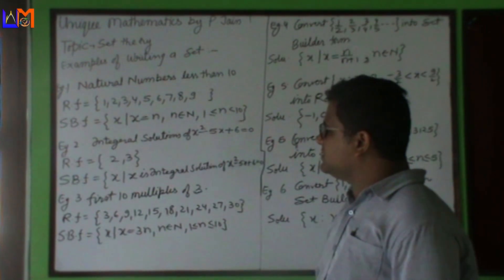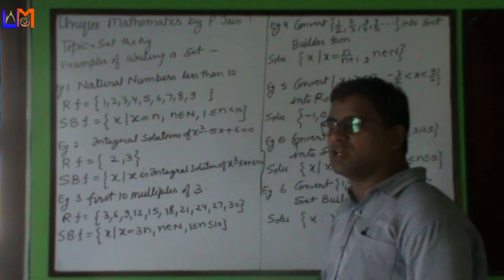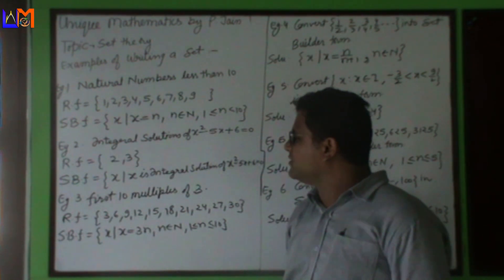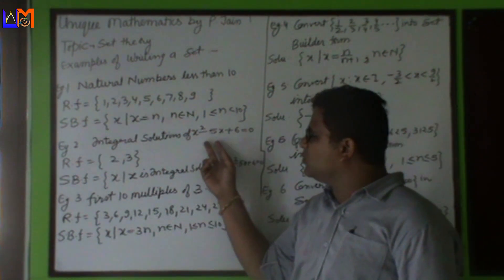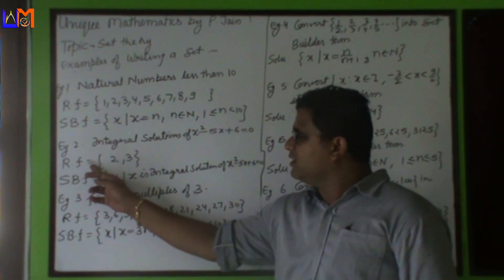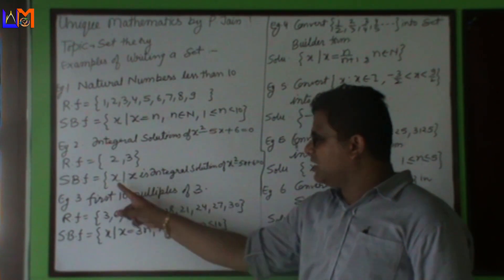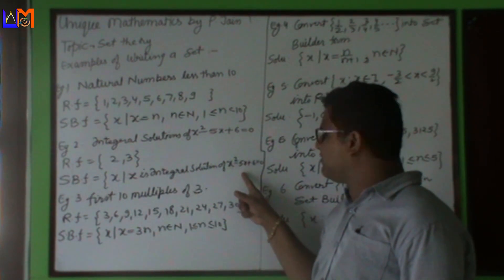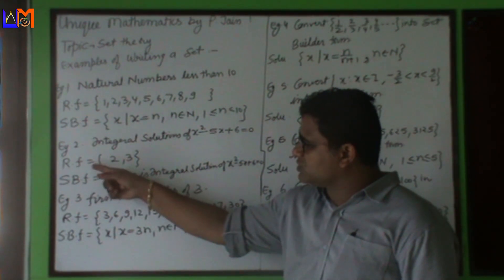Example two: integral solutions of x square minus 5x plus 6 equals to zero. This is a quadratic equation, and we can find the solutions by splitting the middle term. If we split the middle term we can see the two solutions will be 2 and 3. We will write them in roster form: curly braces 2 comma 3. Whereas in set builder form we will write: x such that x is integral solution of x square minus 5x plus 6 equals to zero.